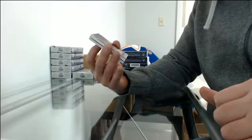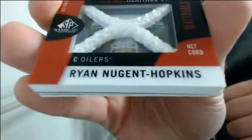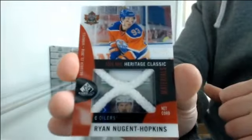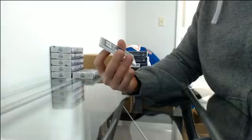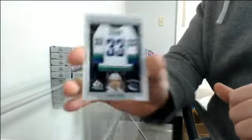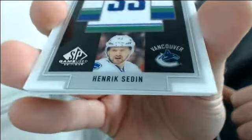Heritage Classic Materials netcord 21 to 35. This will go to Edmonton, Ryan Nugent Hopkins. Goilers. Frameworks for Vancouver, Henrik Sedin. These are cool cards.